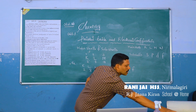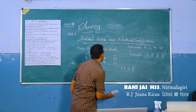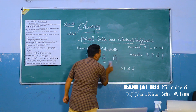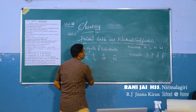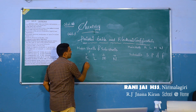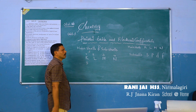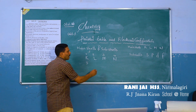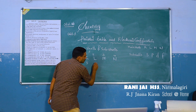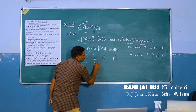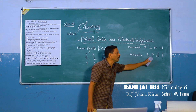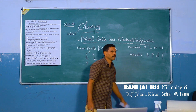The first main shell K has only one sub-shell, S. The second shell L has two sub-shells: S and P. The sub-shell names are S, P, D, F.